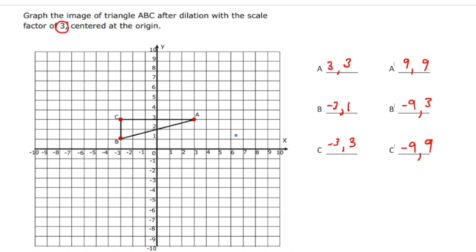Let's plot these new points. (9, 9) is going to be right here — that's A prime. (-9, 3) is going to be right here — that's B prime. And then (-9, 9) is up here — that's C prime. Now when I connect them, you can see it's the same shape as the original. Here's a right angle on the original, and here's the same right angle on the dilated image.